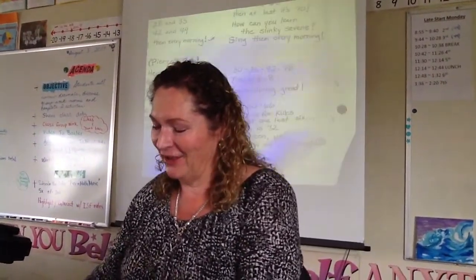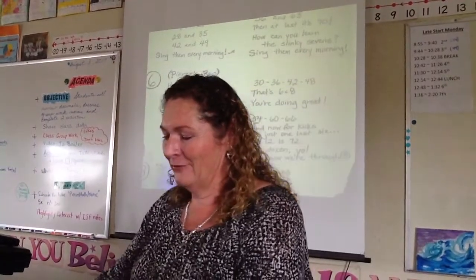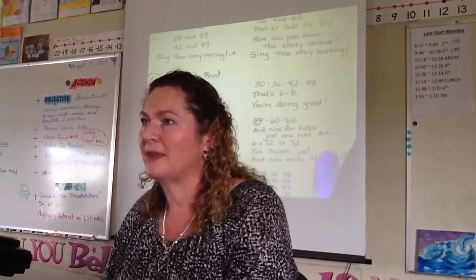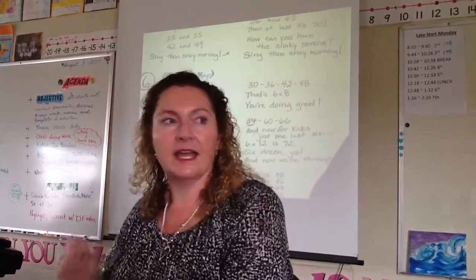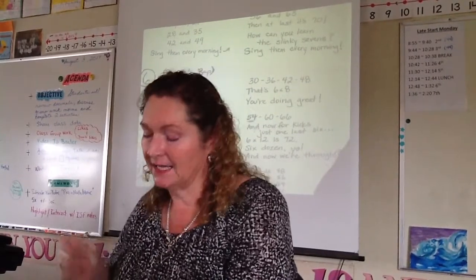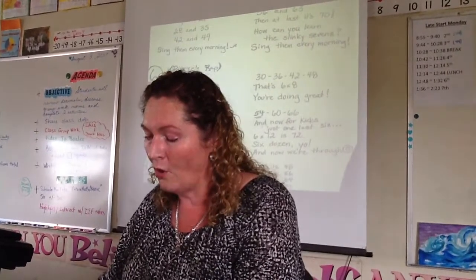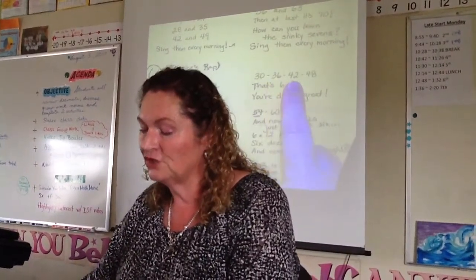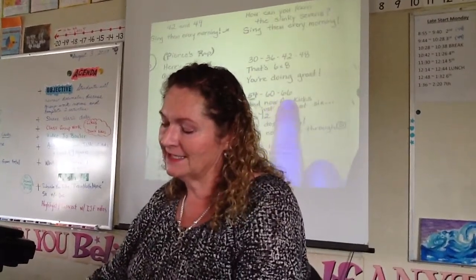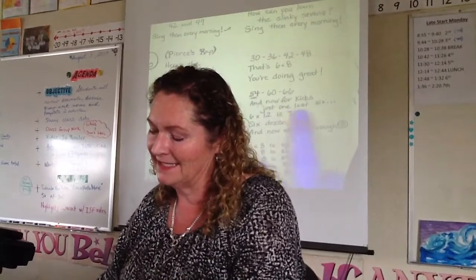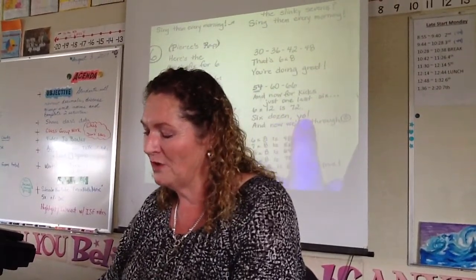You can see all these different things on the yellow page so that if you need to see the lyrics, we'll go right here — I'll point to this, you guys show me the skip counting. Ready, go: Here's the quick fix for 6. Here's the quick fix for 6: 6, 12, 18, 24 — that's 6 times 4. Let's do some more. 30, 36, 42, 48 — that's 6 times 8. You're doing great. 54, 60, 66. And now for kicks, just one last 6 — 6 times 12 is 72. And now we're through.